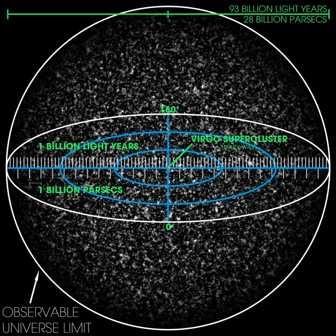The radius of the observable universe is therefore estimated to be about 46.5 billion light-years and its diameter about 28.5 gigaparsecs (93 billion light-years, 8.8×10²³ km or 5.5×10²³ miles). The total mass of ordinary matter in the universe can be calculated using the critical density and the diameter of the observable universe to be about 1.5×10⁵³ kg.